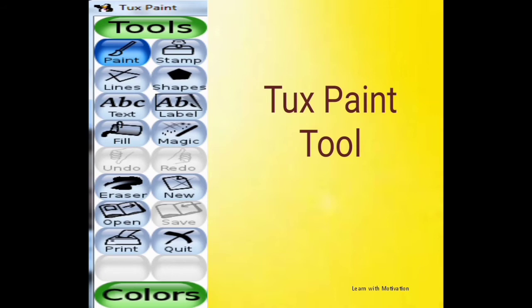Tux Paint tools you can easily use: paint, stamp, lines, shapes, label, fill, magic. If you are wrong, then you can also use the undo and redo command. You can also use the eraser. You can erase, open a new page, open an already saved file, save the drawing. If you want to print, you can also print. And if your work is done, then you can close the window.